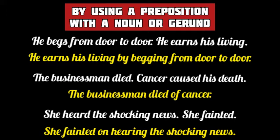Another important way to combine two separate simple sentences into a new simple sentence is by using a preposition with a noun or a gerund. 'He begs from door to door' and 'he earns his living' — the first sentence shows his manner of earning, so it will be changed to a preposition and gerund: He earns his living by begging from door to door. 'The businessman died' and 'cancer caused his death' — the second sentence shows the cause, so we replace it with a preposition and noun: The businessman died of cancer. Similarly, 'she heard the news' and 'she fainted' — the first sentence shows the cause, so it will be substituted by a preposition and gerund: She fainted on hearing the shocking news.